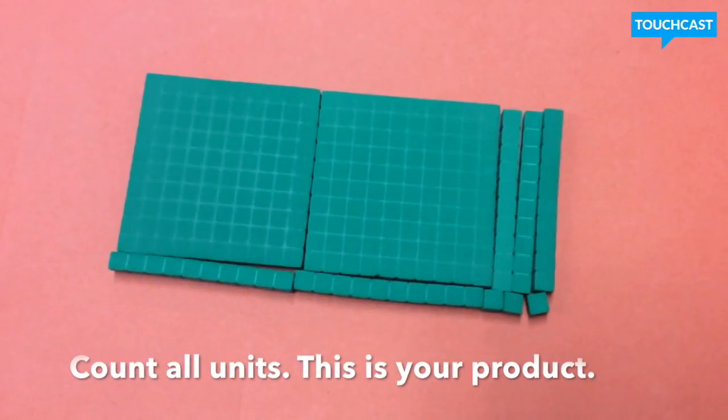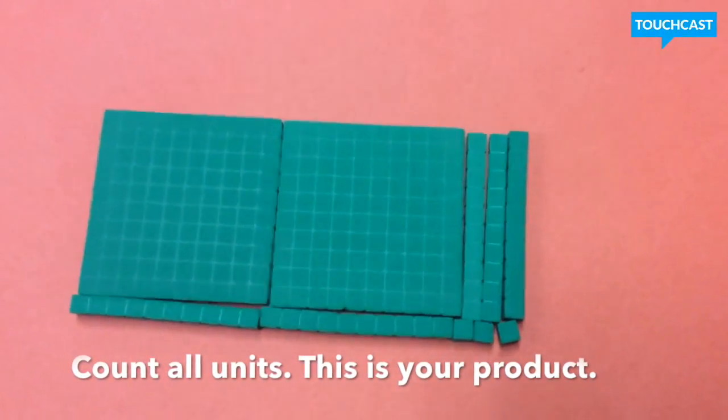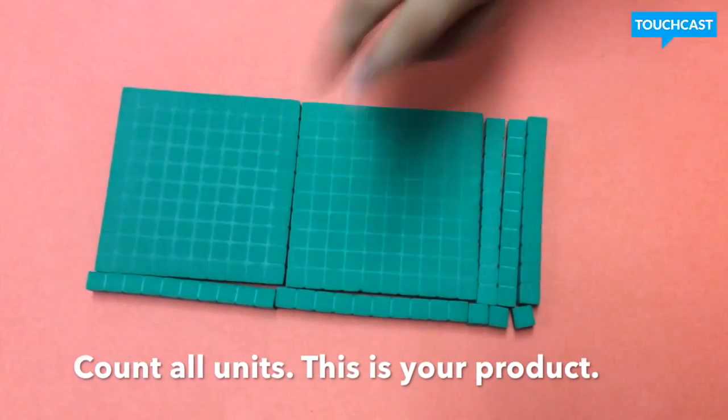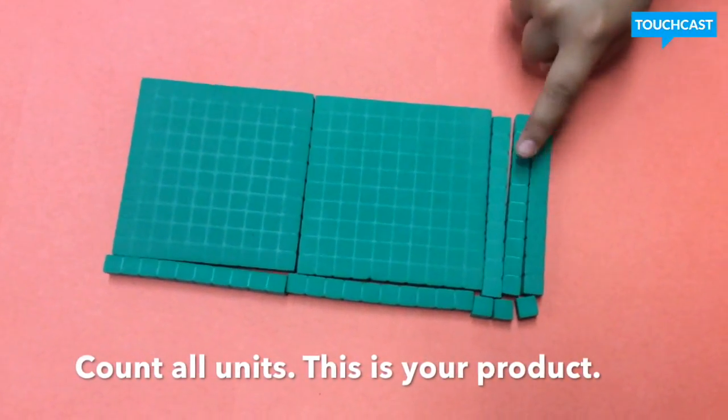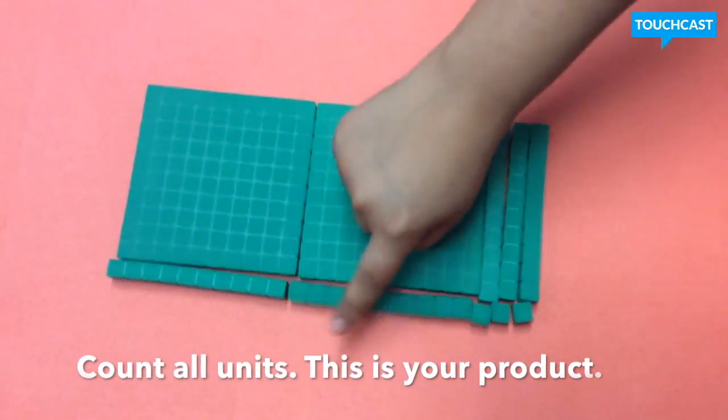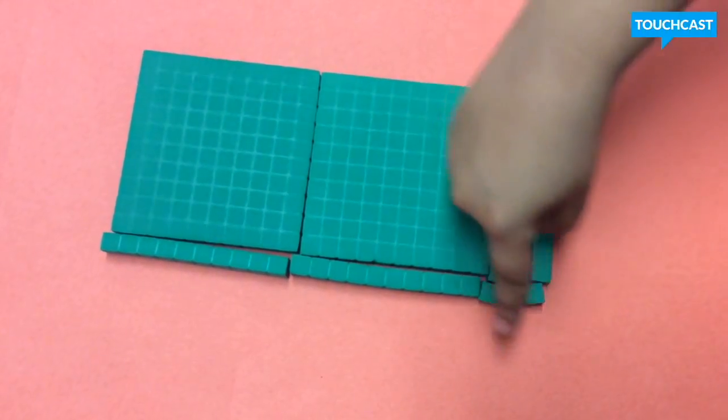Now that we made our area model, we need to count them. Two and one, two, three, four, five, fifty-three hundredths.